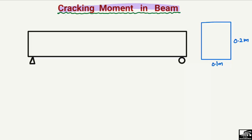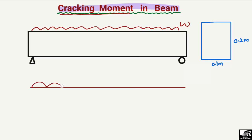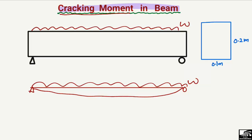By cracking moment I mean the moment at which the first crack in the concrete starts to occur — this is known as the cracking moment. For example, if I consider a beam with some load W acting as a uniformly distributed load and I draw the line diagram for this beam, due to this load W there will be some moment occurring at the beam.